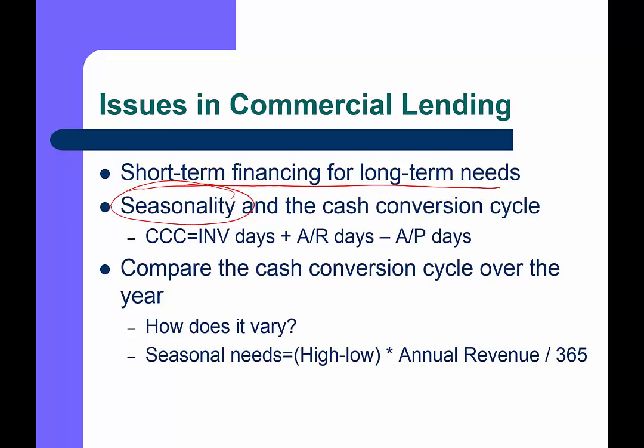Seasonality is another big consideration. End-of-year financial statements are only a snapshot of the balance sheet at a particular point and can vary widely. Think about a company like Toys R Us building up huge amounts of inventory in early fall because more than half their annual sales occur in Q4. The cash conversion cycle — days in inventory plus days in accounts receivable minus accounts payable — can vary widely over the year, so we need to think carefully about seasonal financing needs.